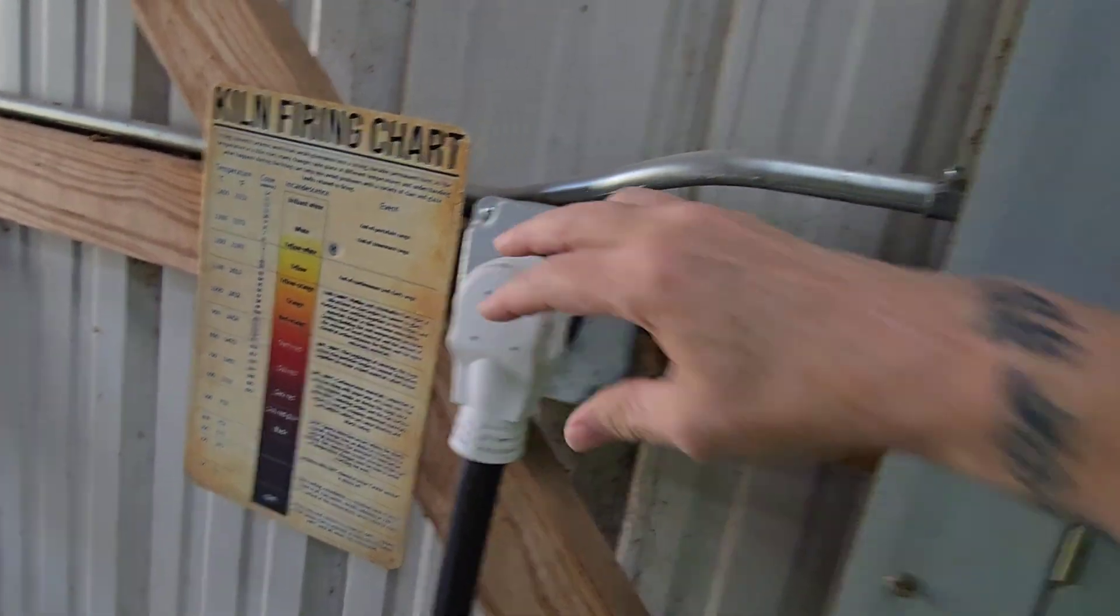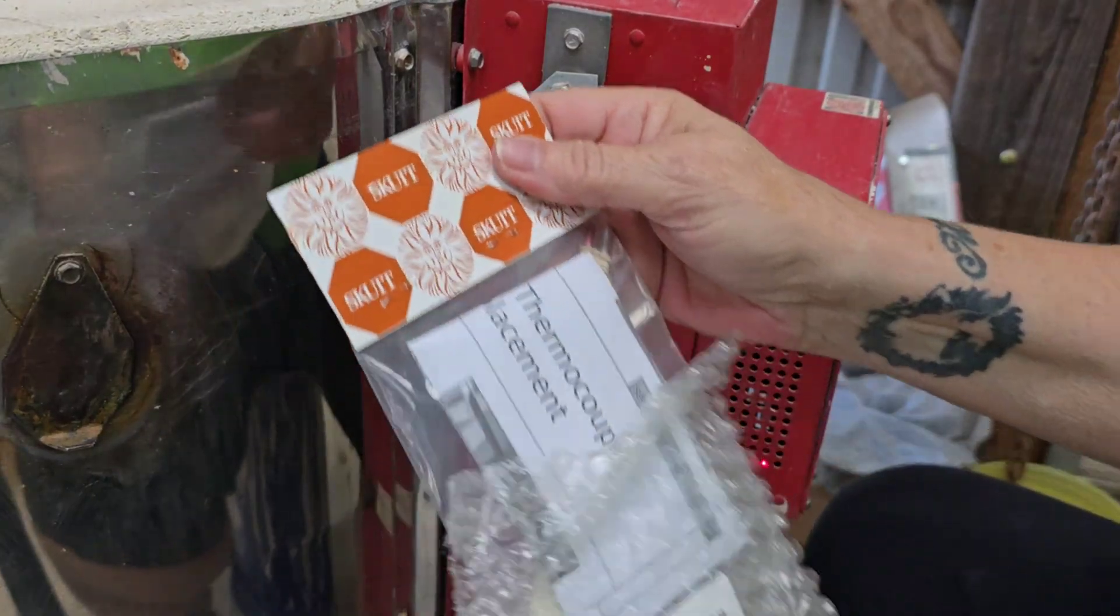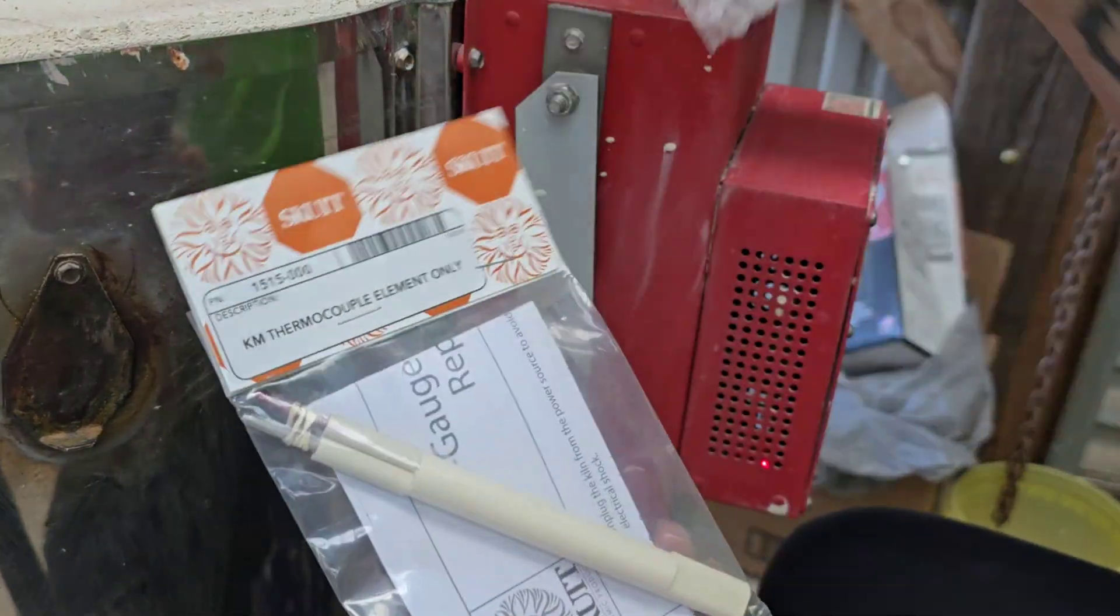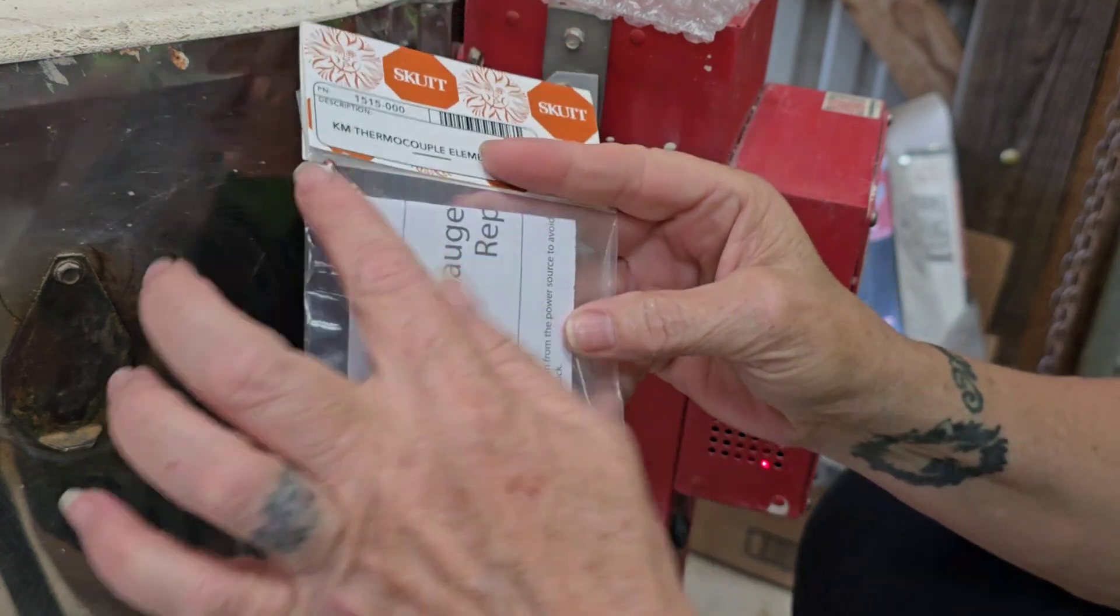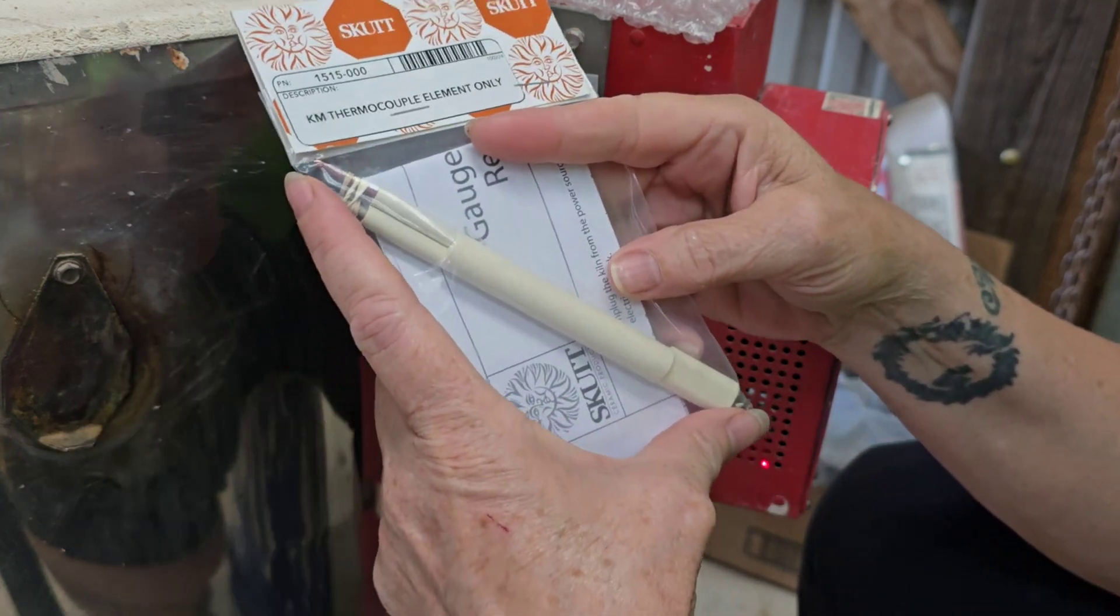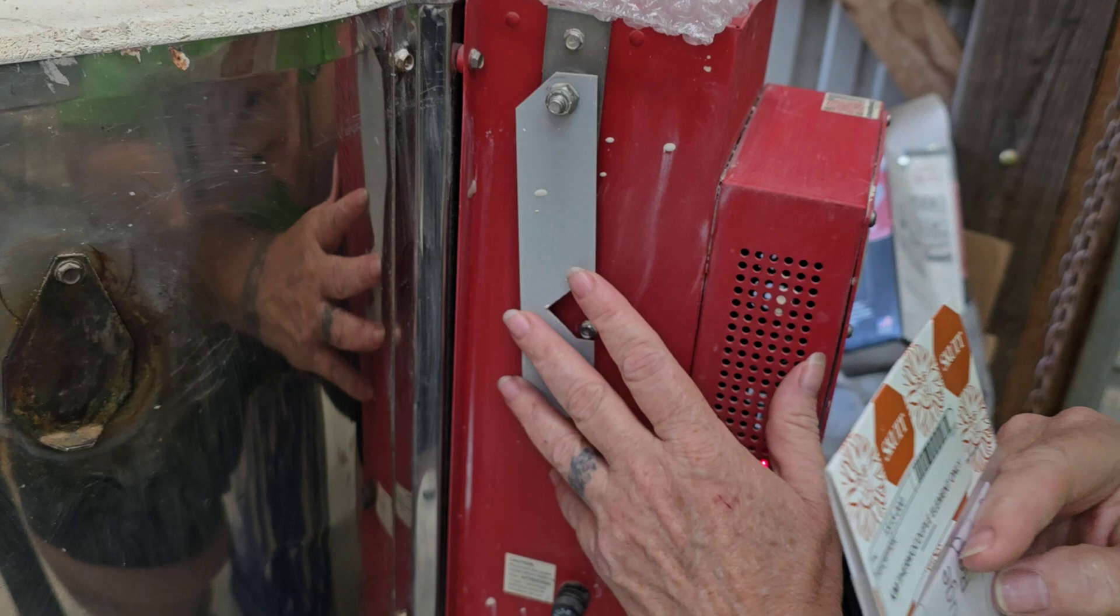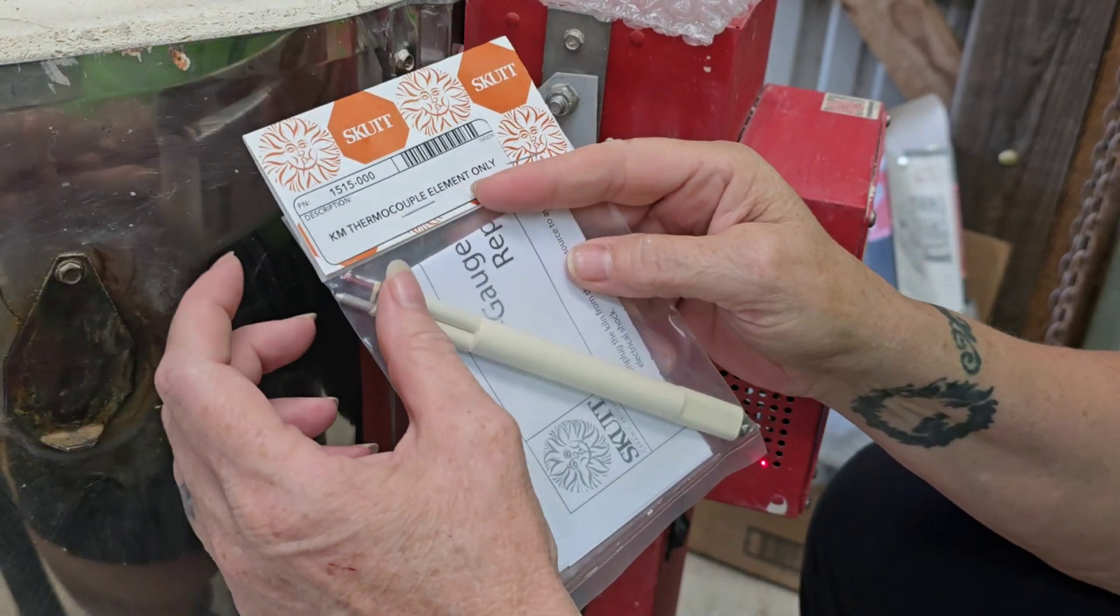Always unplug the kiln before you get started. So this is what the thermocouple looks like. Now, you can buy just this part if this is all you need. If your kiln is older, if you've had some problems, you might need the whole assembly.